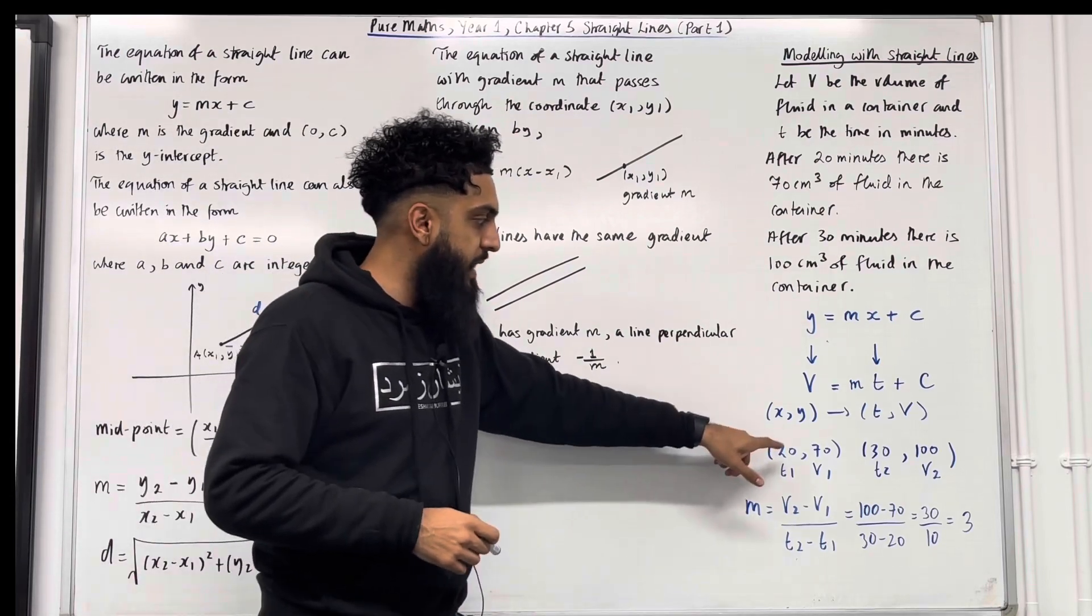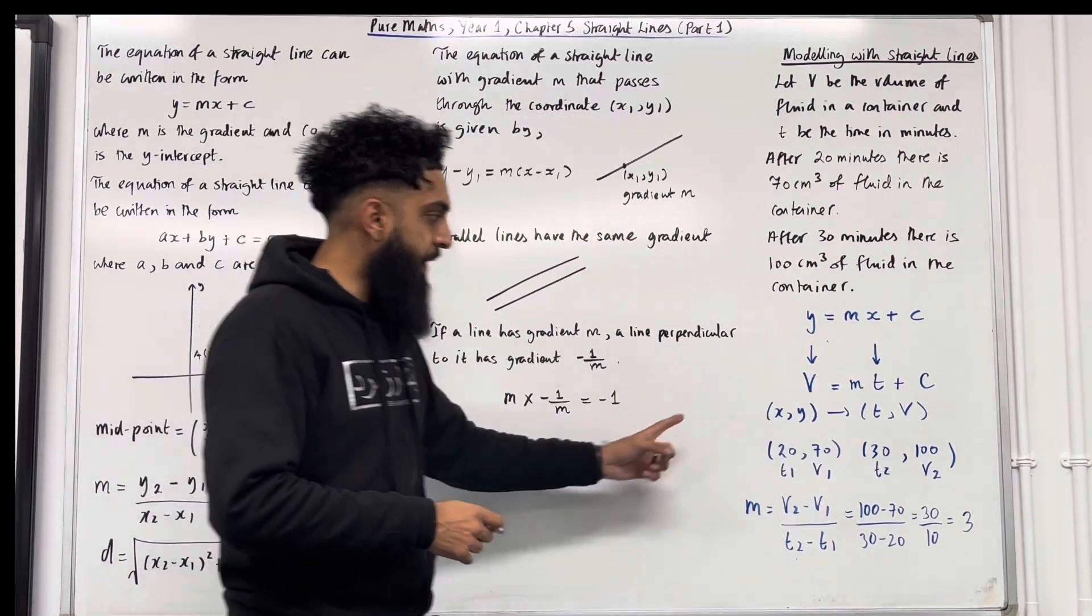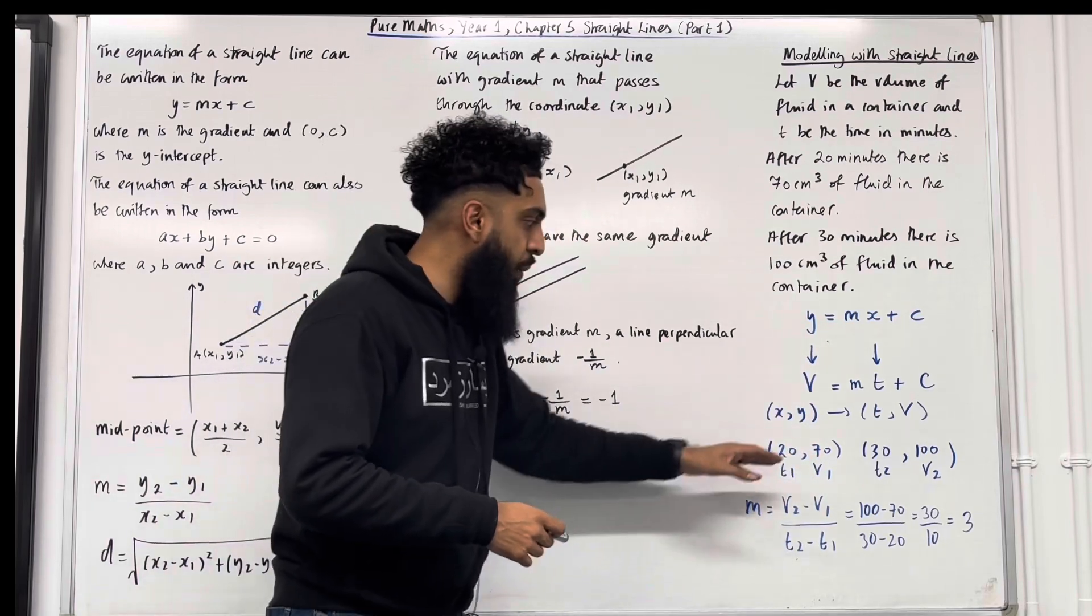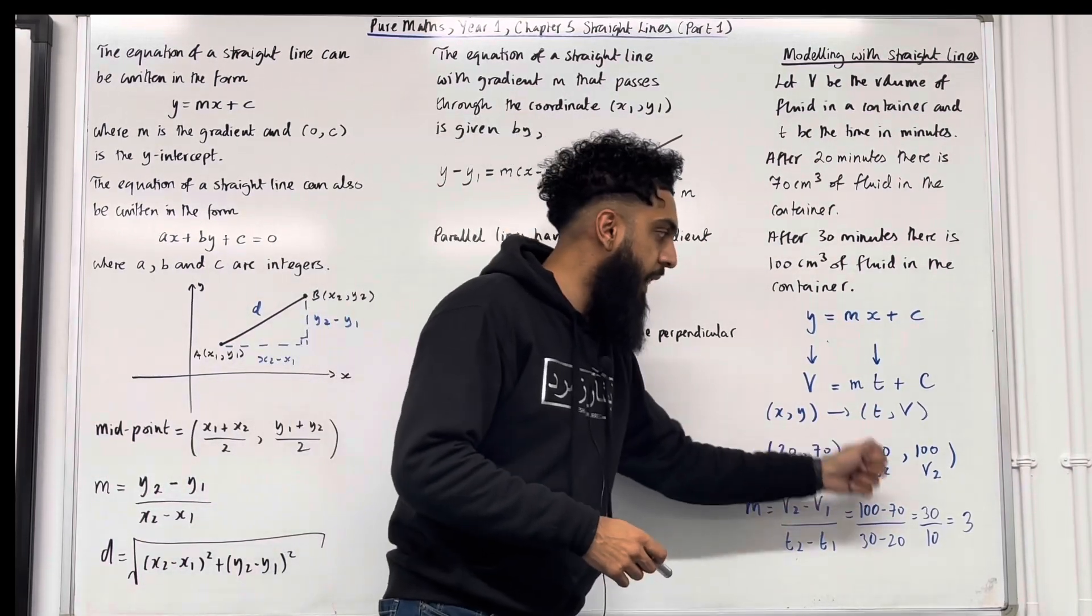In this question, we can actually extract two coordinates. The first one is 20 and 70 and the second one is 30 and 100. This coordinate over here, we can label it as t1 v1 and this coordinate over here, we can label it as t2 v2.